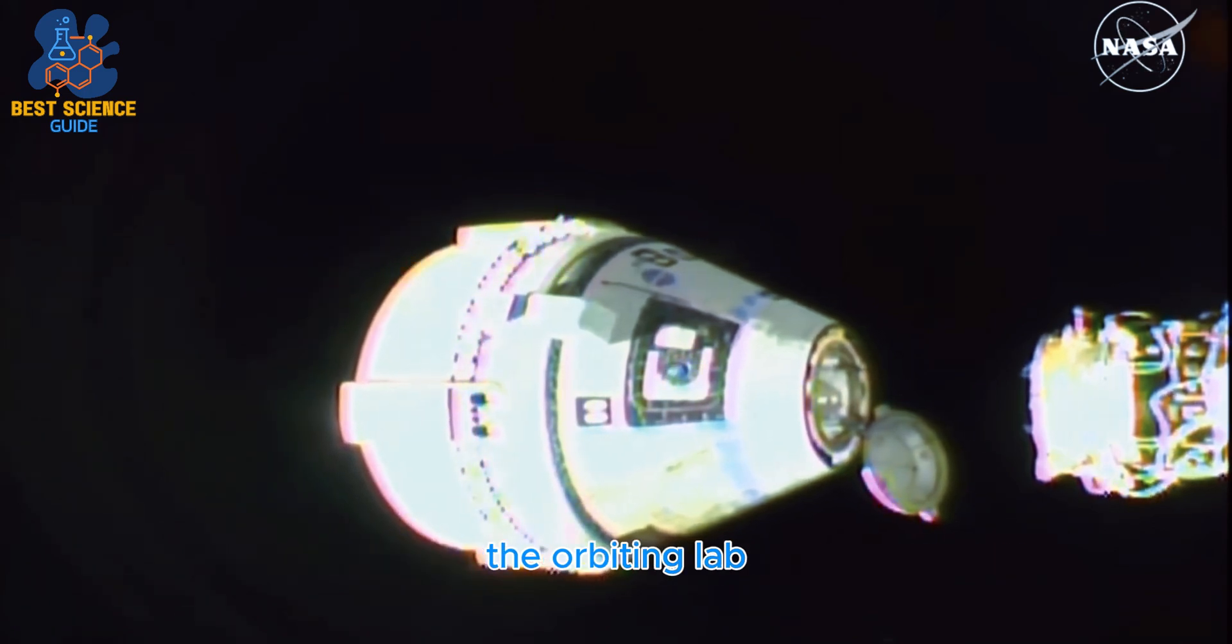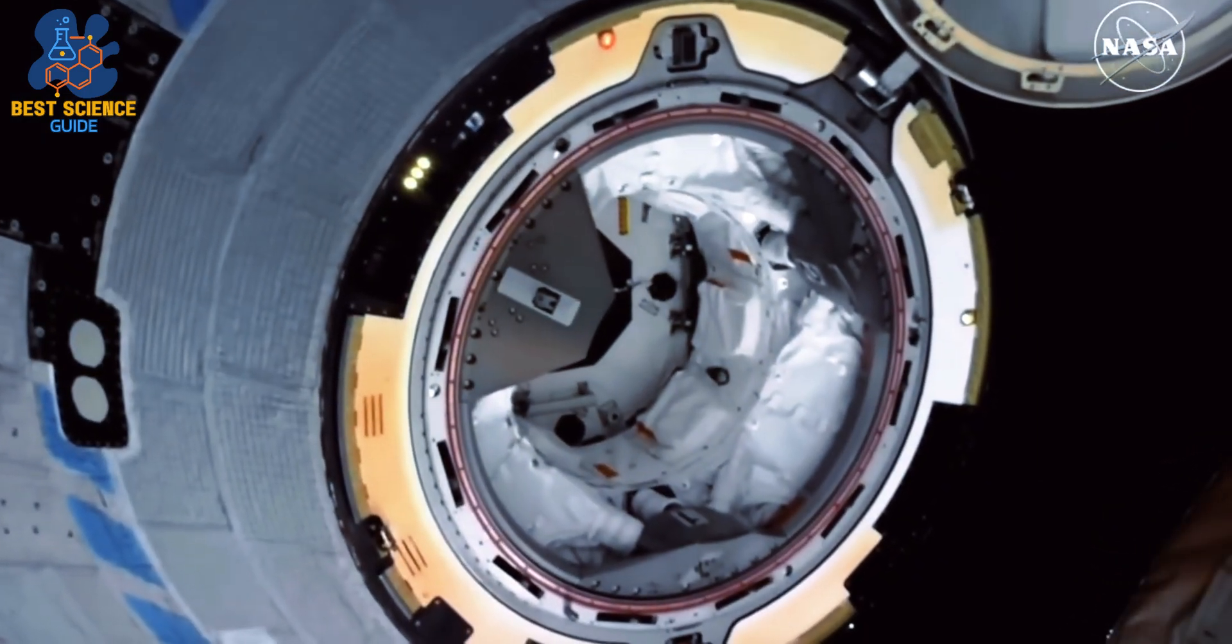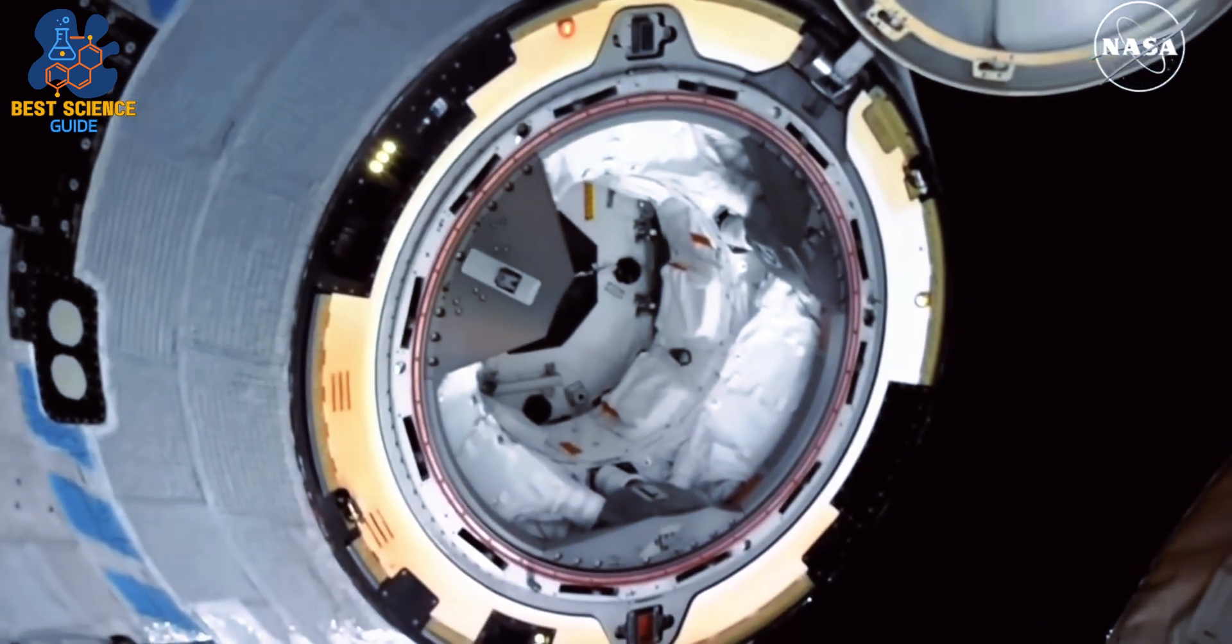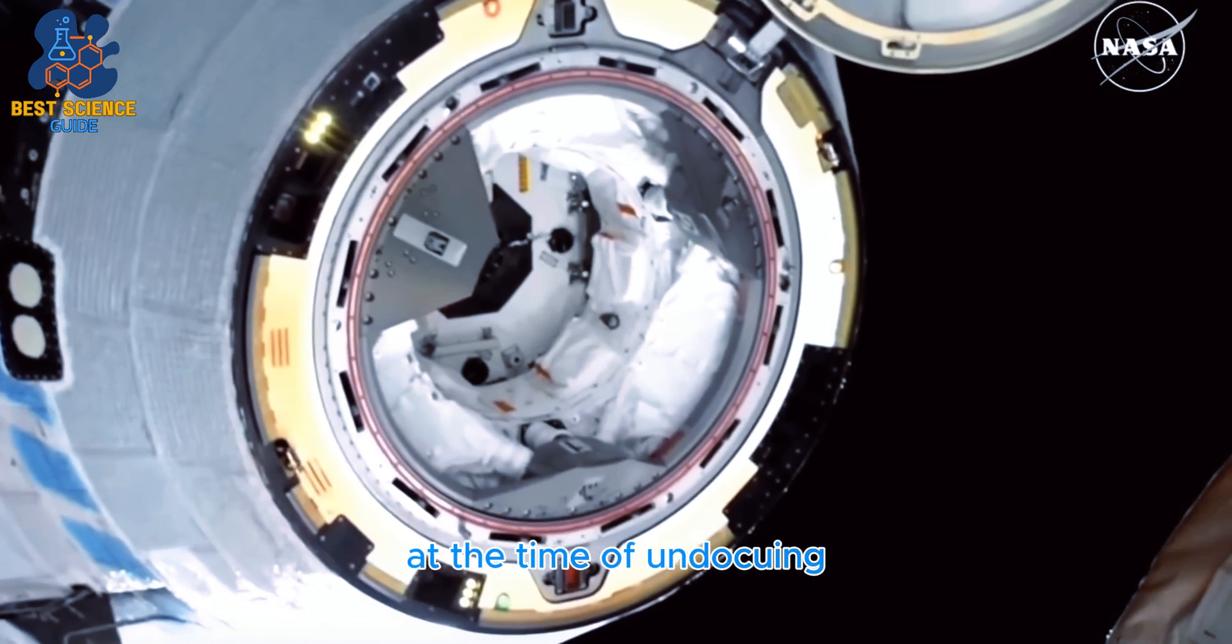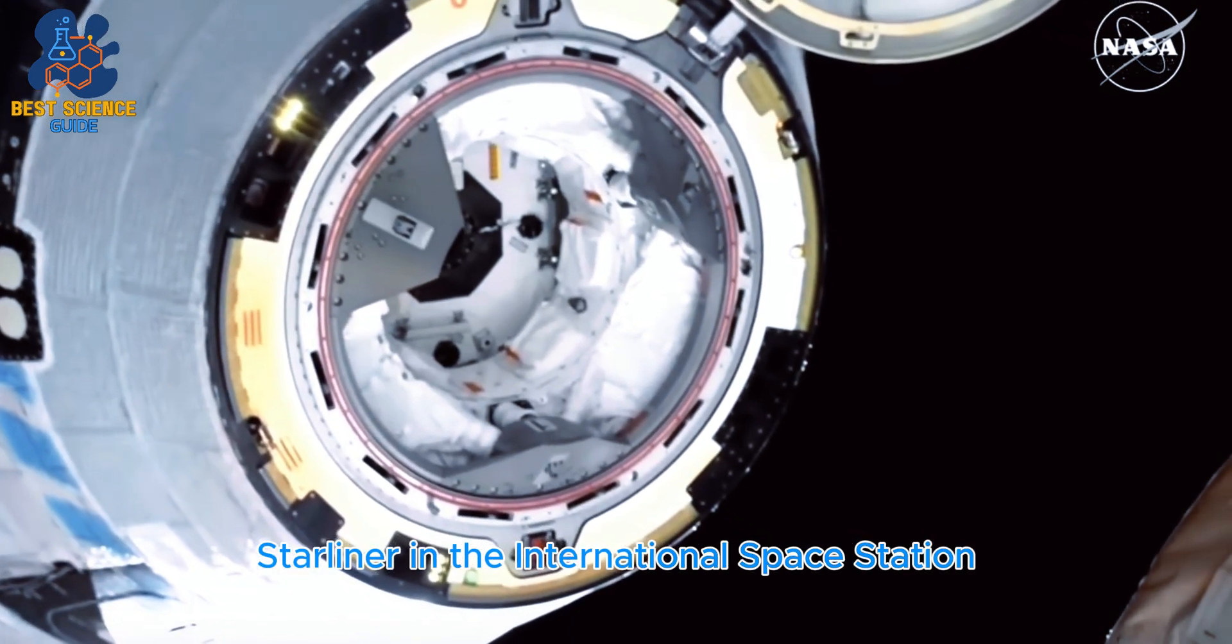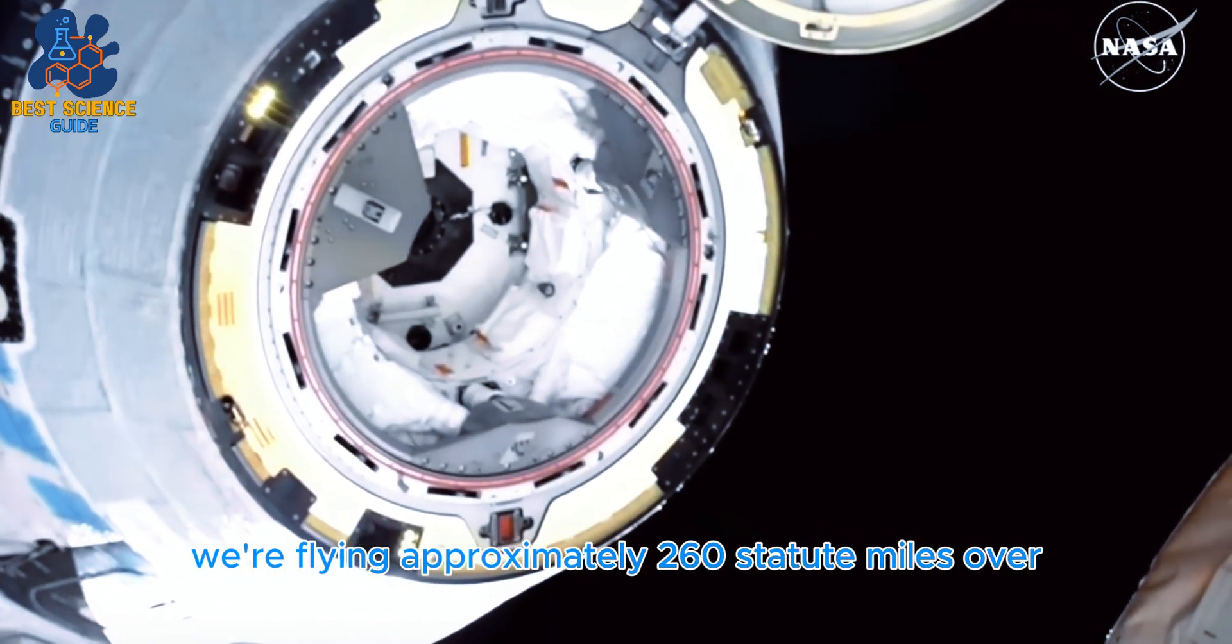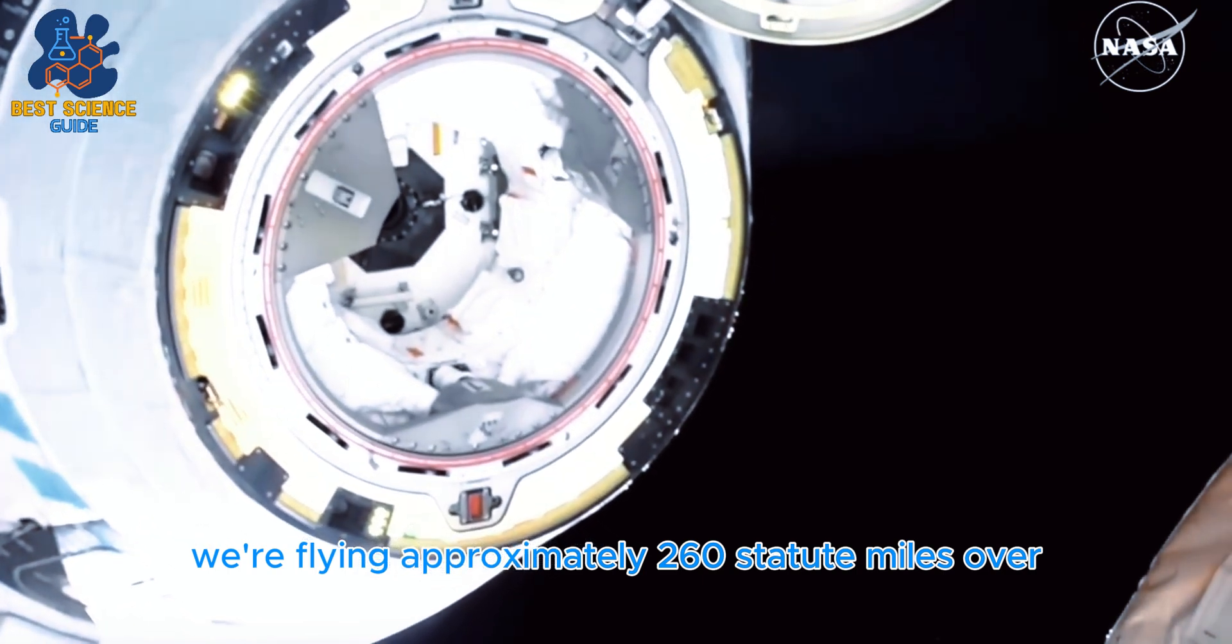The vehicle is now about two meters away from the International Space Station. At the time of undocking, Starliner and the International Space Station were flying approximately 260 statute miles over central China.